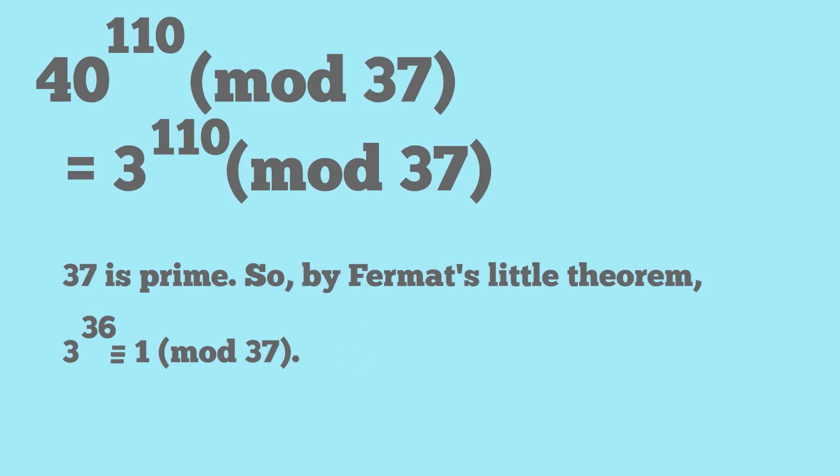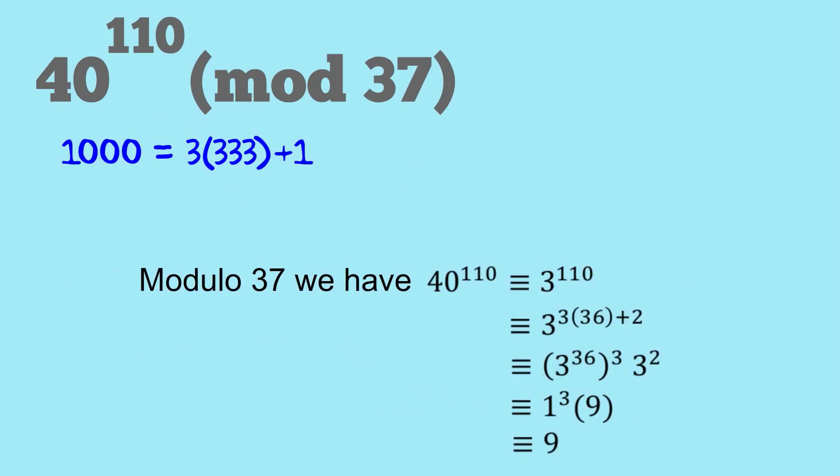And now we use what we did before. We recognize that 110 is equal to 3 times 36 plus 2. So now let's work that out. We've got 40. This is all modulo 37. We've got 40 to the power of 110 is equivalent to 3 to the power of 110 is equivalent to 3 to the power of 3 times 36 plus 2.